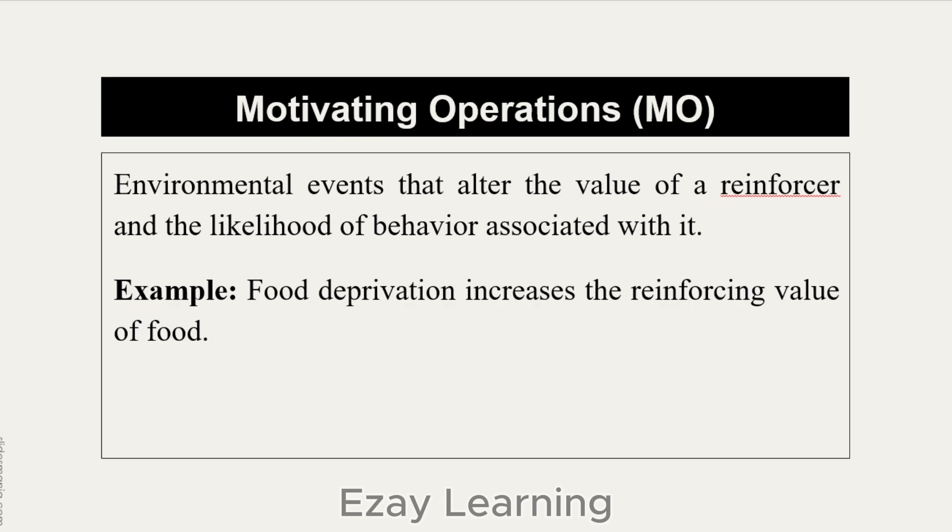Motivating operations are environmental events that alter the value of a reinforcer and the likelihood of a behavior associated with it. Motivating operations can increase or decrease the value of a reinforcement. Example: food deprivation increases the reinforcing value of food, and food satiation decreases the reinforcing value of food — these represent the motivating operations related to those situations.